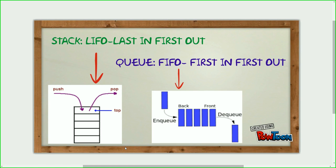In stacks, addition or deletion of items is done from top only. Hence, it's called LIFO. On the other hand, in queue, addition is done from the rear end and deletion from front end.